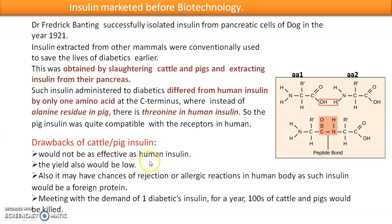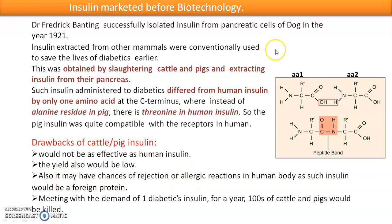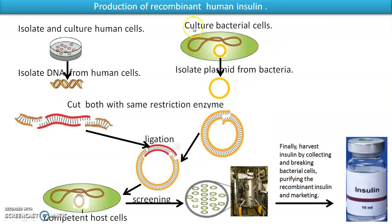The drawbacks of animal-derived insulin were that it was not as effective as human insulin, the yield was very low, and you had to slaughter so many cattle and pigs to meet the demand of even one diabetic patient. Additionally, rejection factors were high because it was a foreign insulin — not produced in the human body.